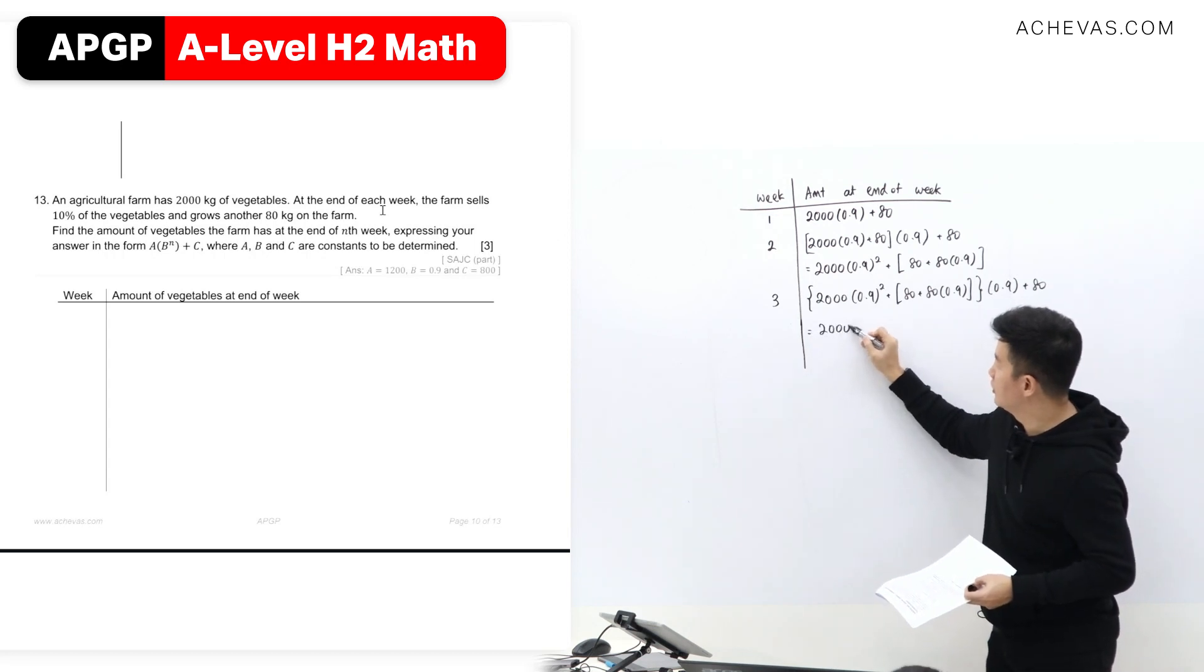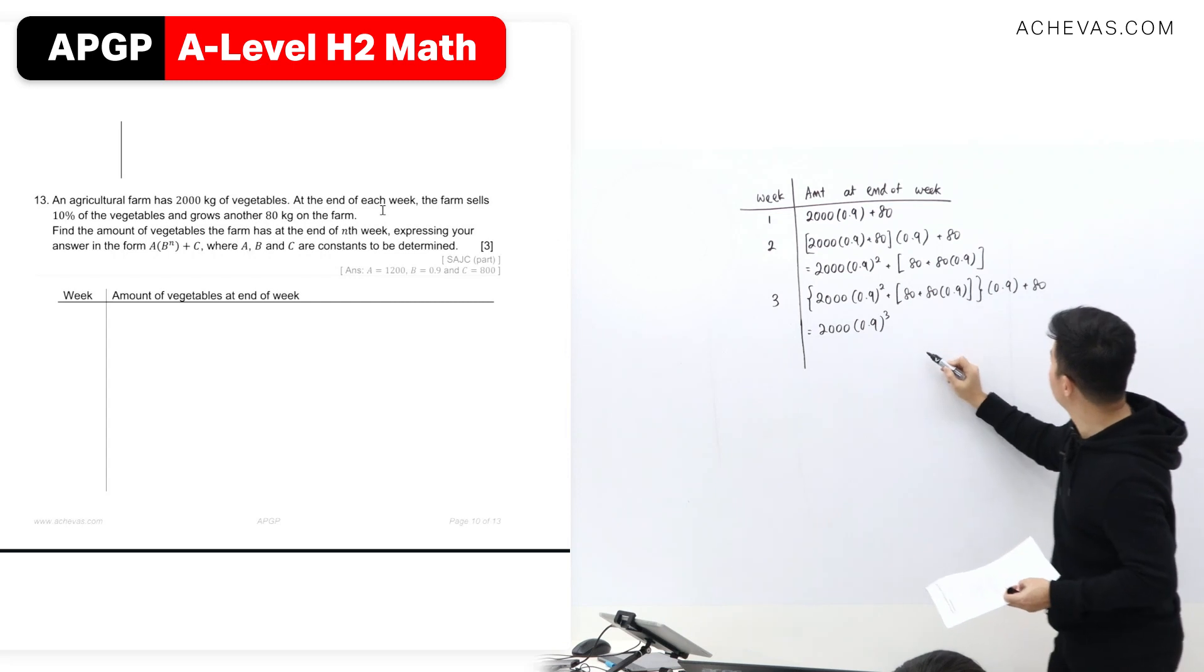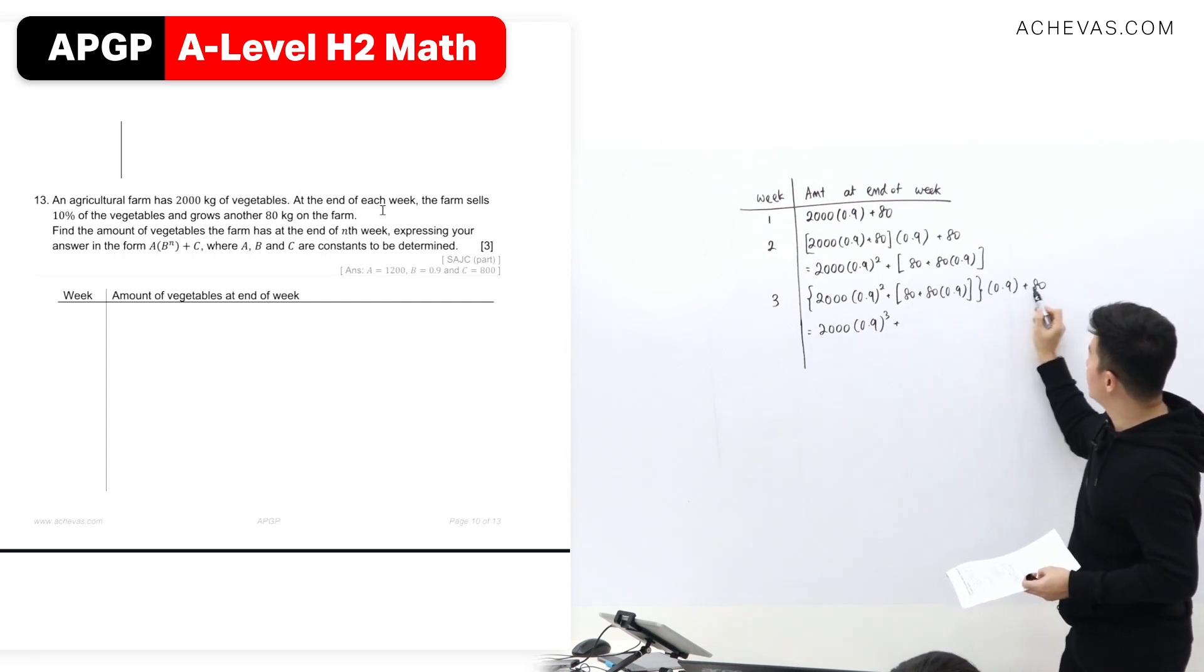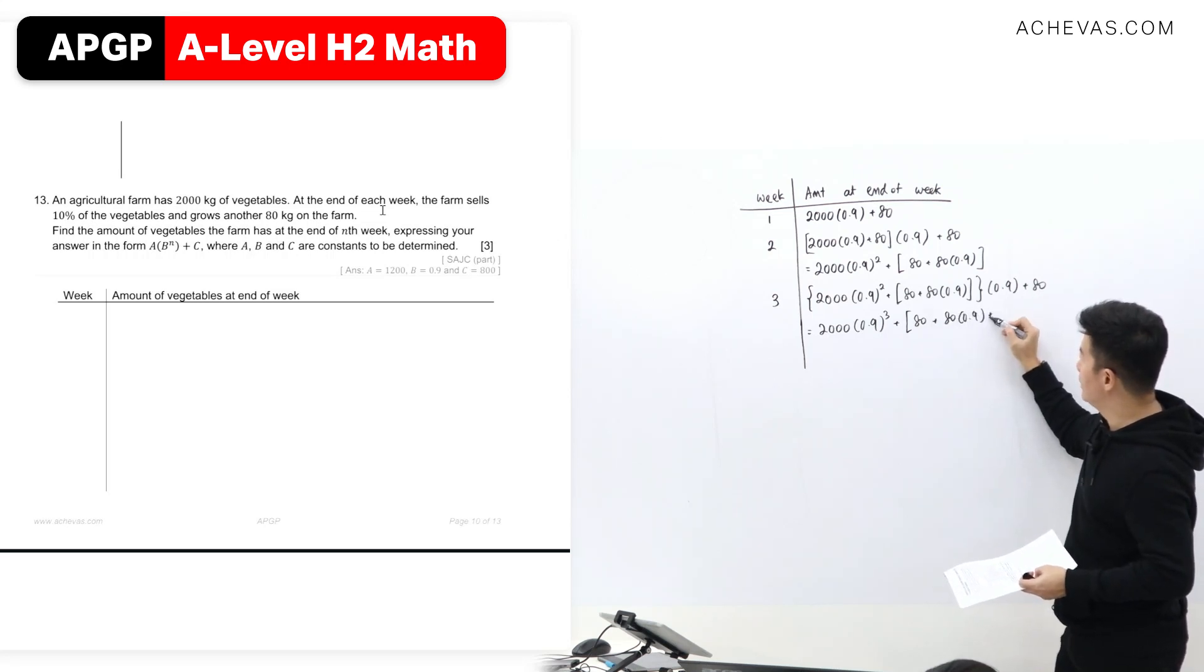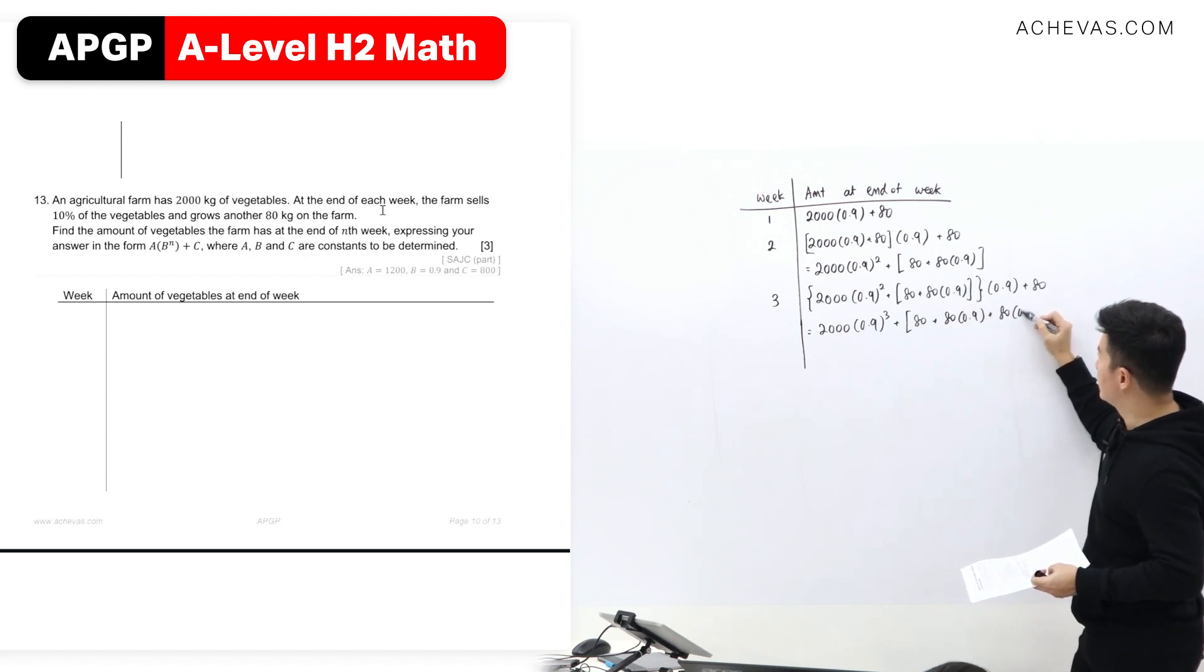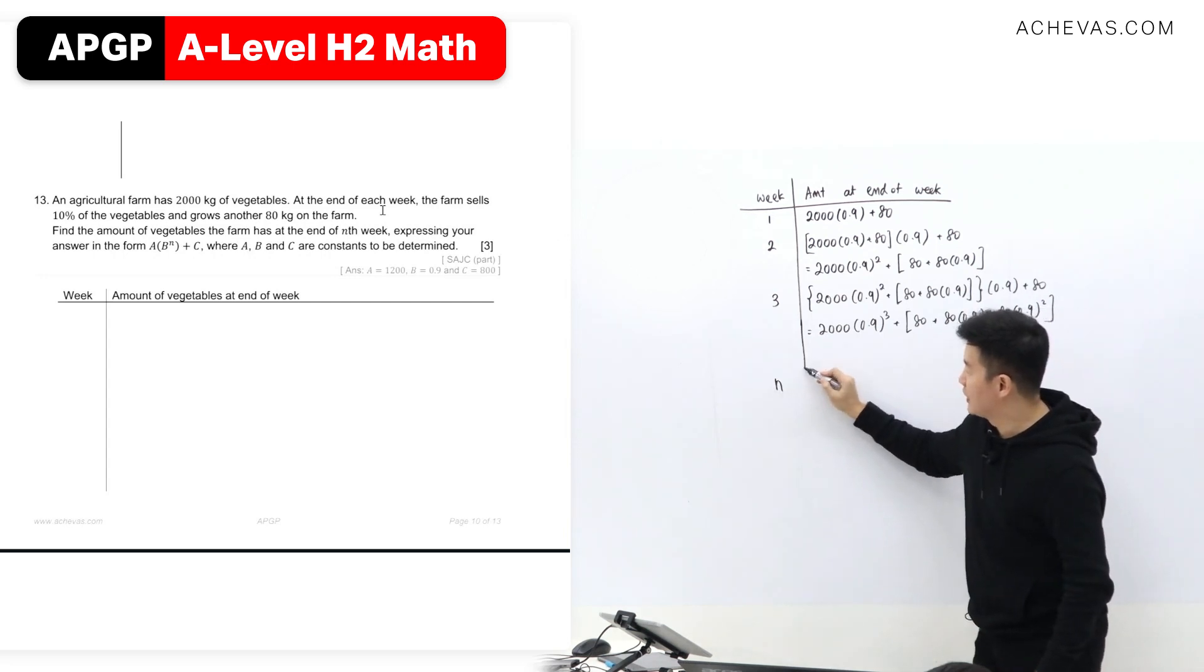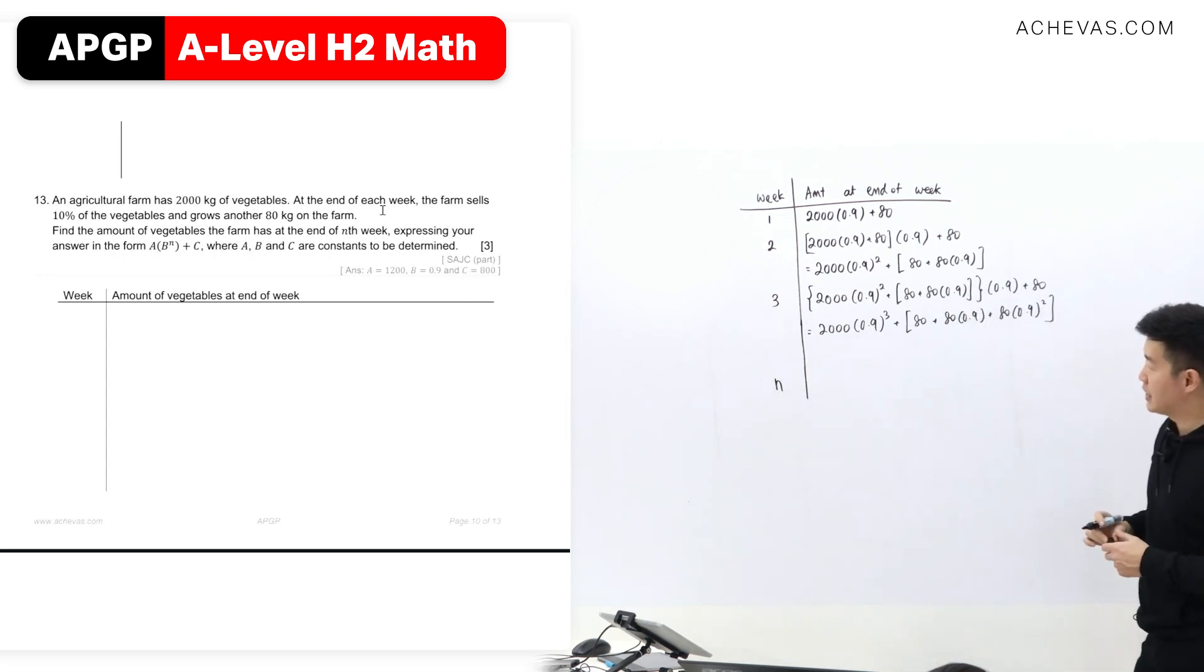we will have this 0.9 to the power of 3. Then regrouping all those with 80s together, we will have an 80. Then we will have this times this, 80 times 0.9. This times this, 80 times 0.9 squared. This can help me to imagine what that is going to be happening for the nth week already.